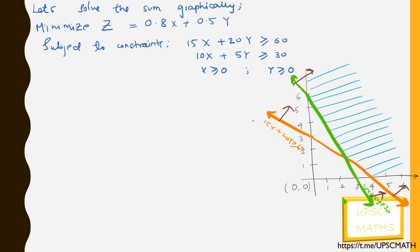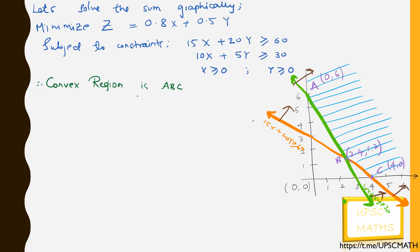Let's name the vertices of the solution space as A, B, and C. We get A = (0, 6), B = (2.4, 1.2), and C = (4, 0). Hence the solution space is defined by vertices A, B, and C.